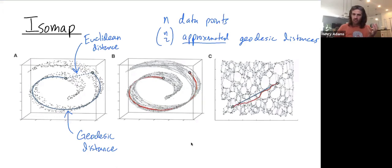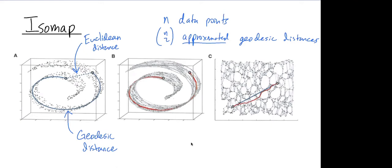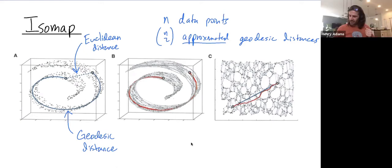Now what we're going to do is we're going to use something called multidimensional scaling, which is another dimensionality reduction technique, to map this dataset into lower dimensional space in a way that preserves these geodesic distances as best as possible. So we map the data points into, say, 2D instead of 3D where I started, and in general it might be from 100 dimensional space down to 10 dimensional space.